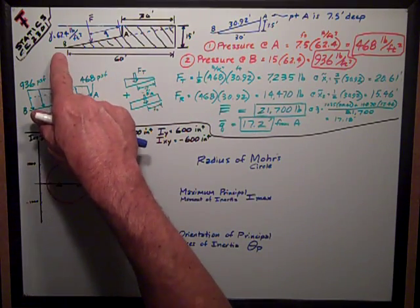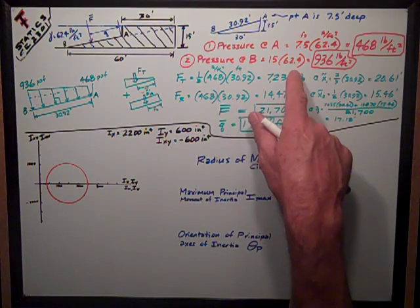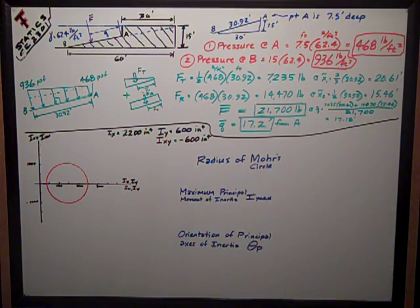Similarly at point B, the bottom of the slope, it's the depth, 15 times 62.4, which equals 936 pounds per square foot.